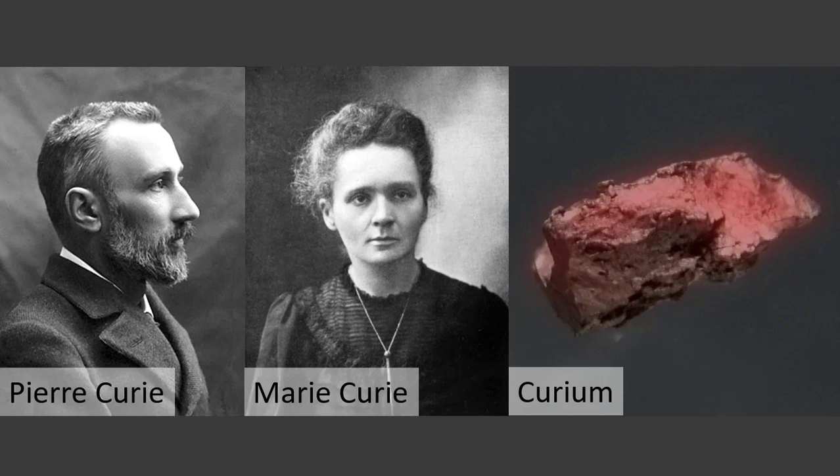It again was created by sequential neutron capture and beta emission from uranium atoms. In one ton of spent uranium fuel from a nuclear reactor, there are about 20 grams of curium. Curium is sufficiently radioactive that metallic curium glows purple in the dark.